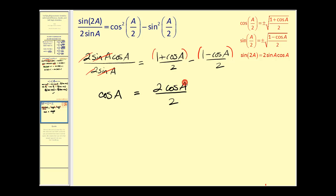And believe it or not in just a couple of quick steps we have verified this identity. These two simplify nicely. And so we have cosine a equals cosine a.